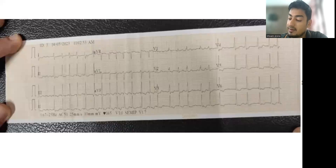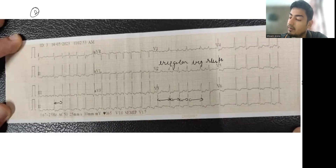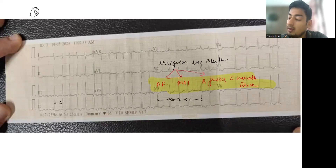This is the second ECG. In this ECG, the RR interval is irregular — this is an irregularly irregular rhythm. The differentials of an irregularly irregular rhythm are atrial fibrillation, multifocal atrial tachycardia, and atrial flutter with variable AV block.